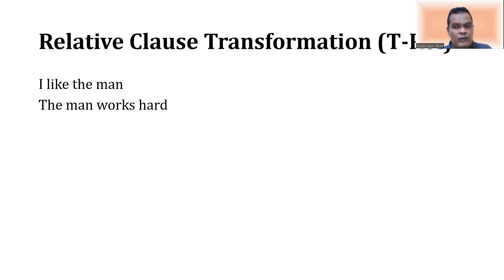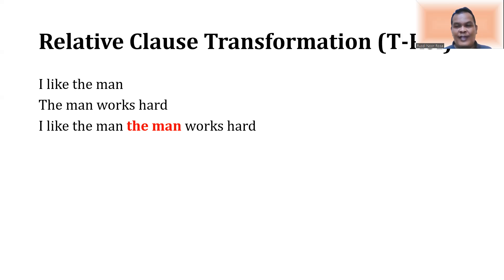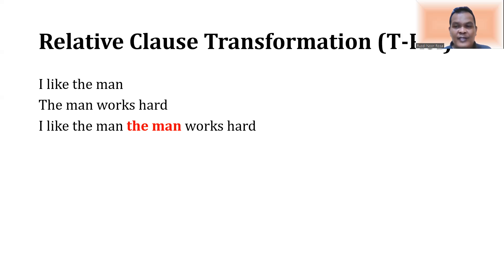When we join these two sentences into one sentence, we will have: 'I like the man, the man works hard.' You see that 'I like the man, the man works hard' — this sentence is not effective. Why? Because there is a repetition of 'the man'; the man appears twice in this sentence. So, in order to make this sentence effective, we have to change 'the man,' and the one marked in red here should be changed into another form — a relative pronoun. That is also the reason why this transformation is called relative clause transformation.